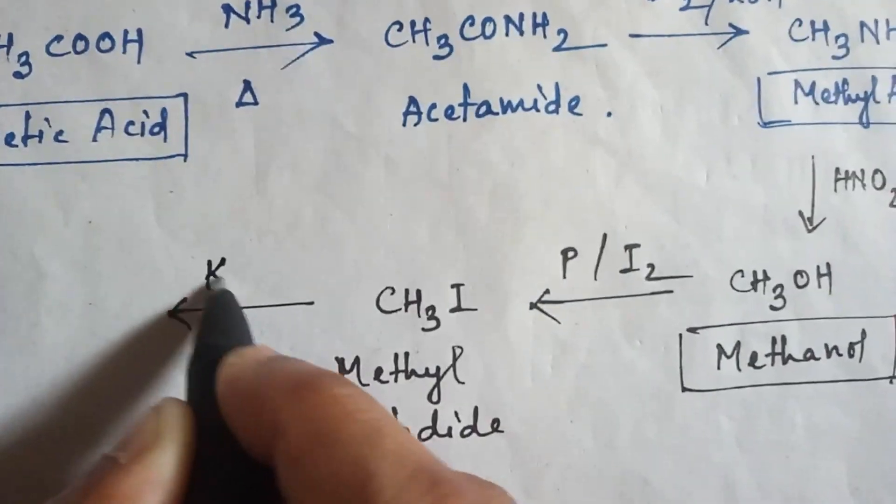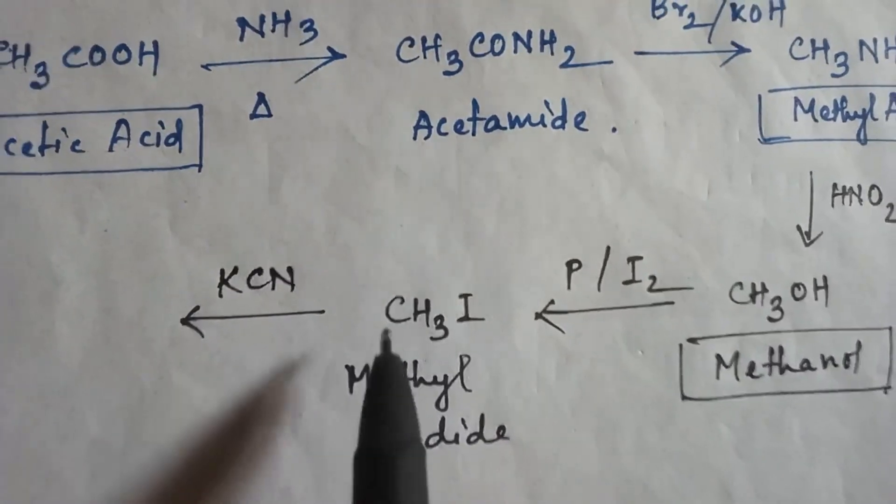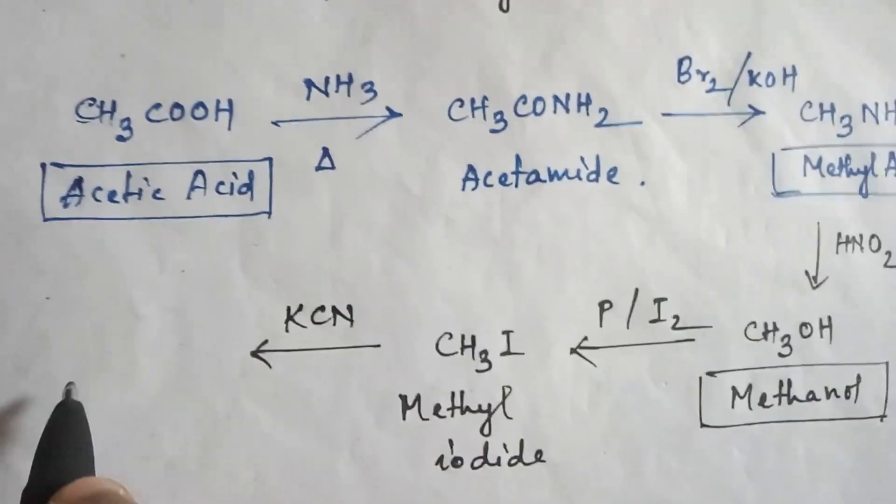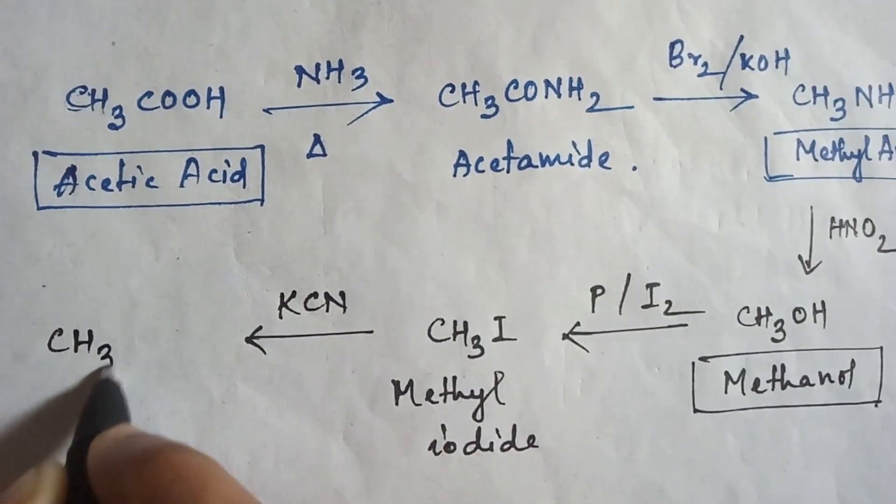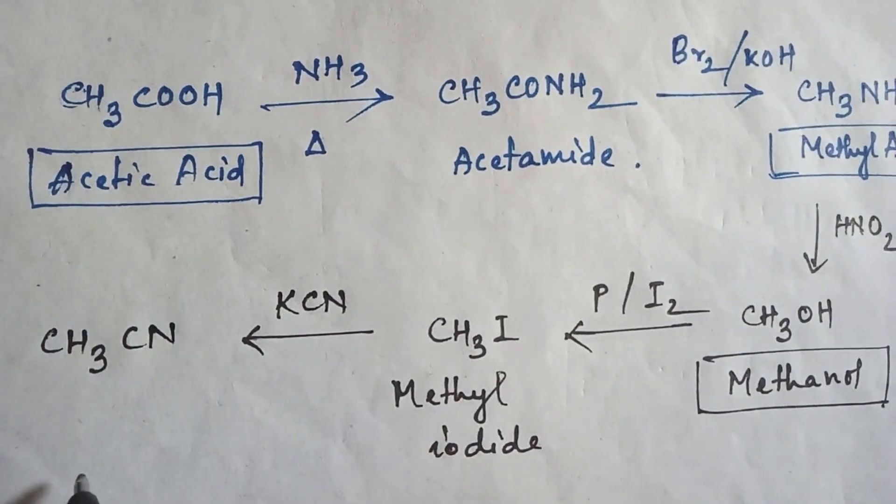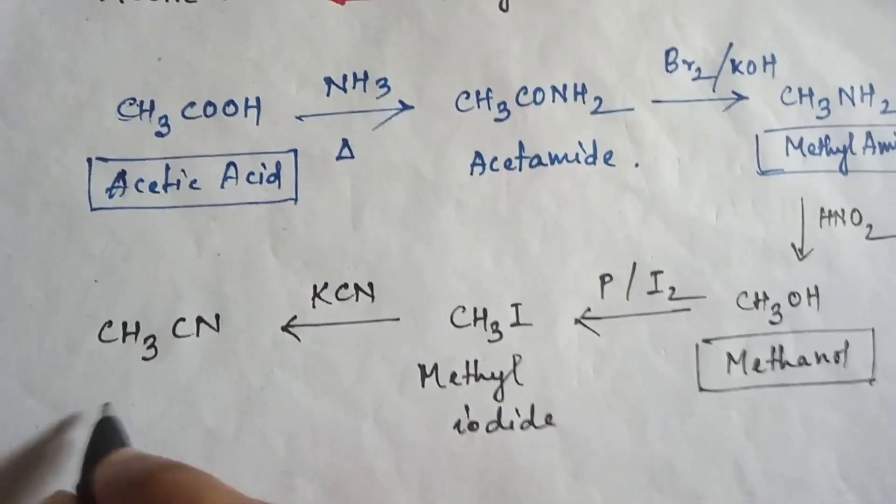If you add potassium cyanide KCN, then the cyanide group will replace this iodine and you will get CH3CN, methyl cyanide.